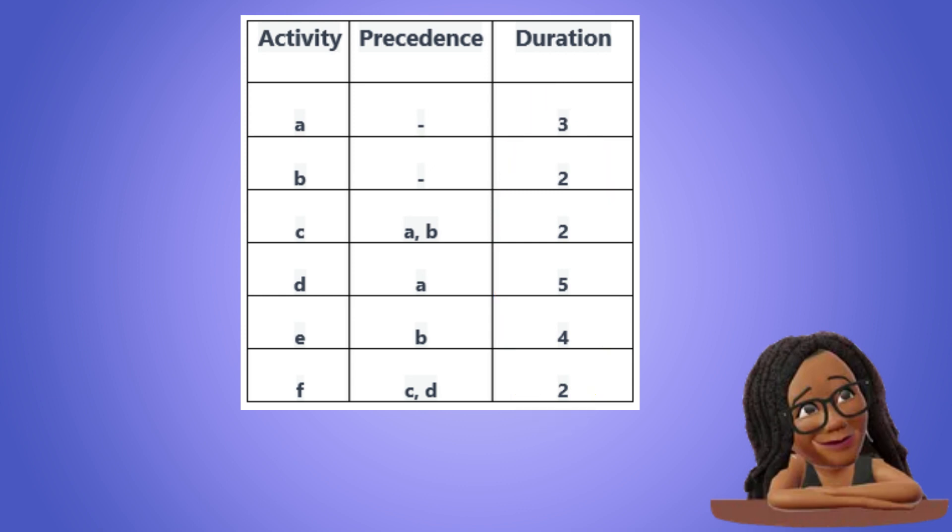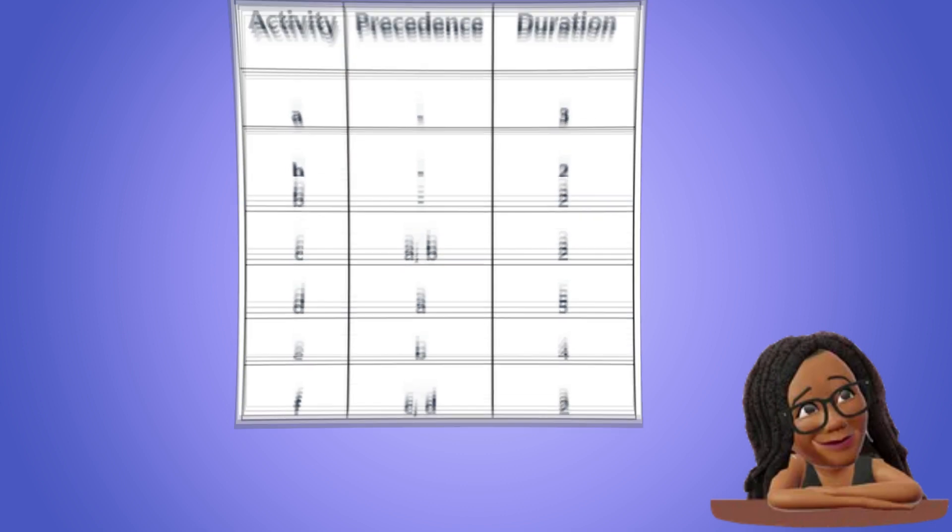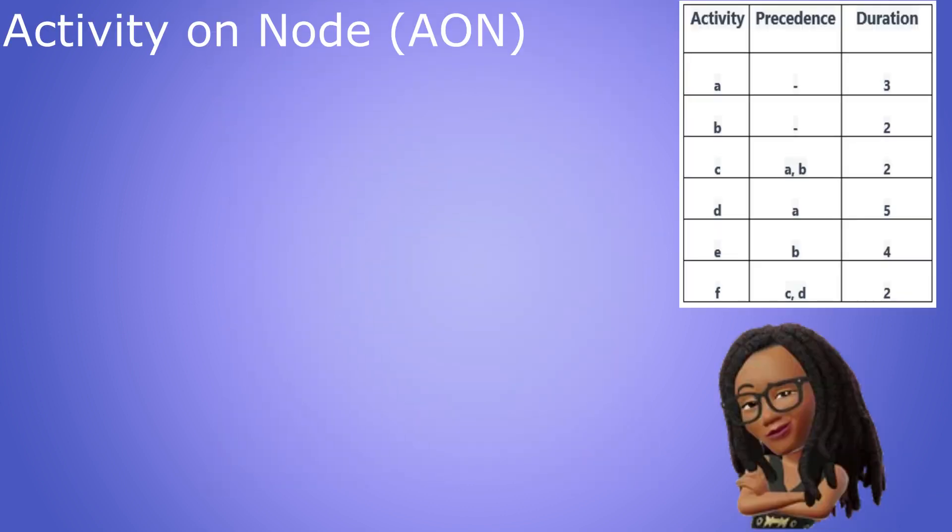Let's draw an activity on node diagram to represent this project. As we can see both A and B do not have any precedence activities. So that tells us they are the starting activities of the project.